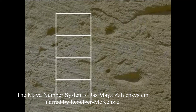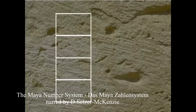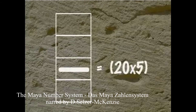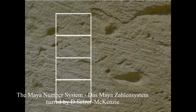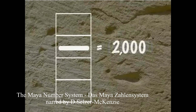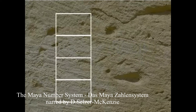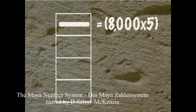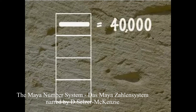So reading from bottom to top: a dot in the ones place is worth 1, and a bar is worth 5. In the 20s place, a dot is worth 20 to the first, or 20, and a bar is worth 20 times 5, or 100. In the 400s place, a dot is worth 20 to the second, or 400, and a bar is worth 400 times 5, or 2,000. And in the 8,000s place, a dot is worth 20 to the third, or 8,000, and a bar is worth 8,000 times 5, or 40,000.